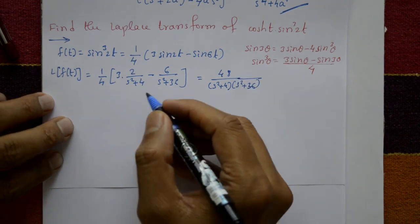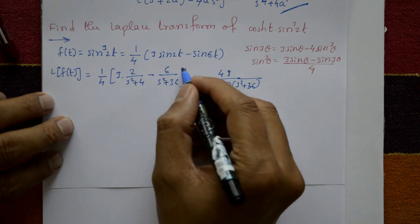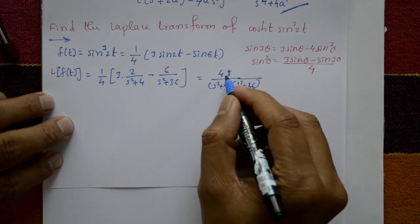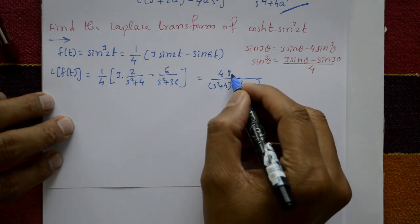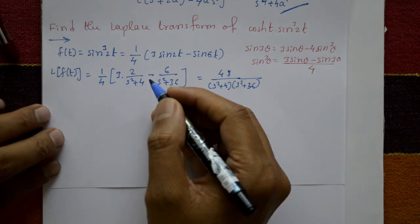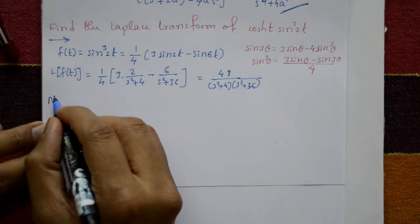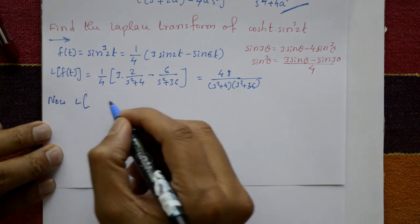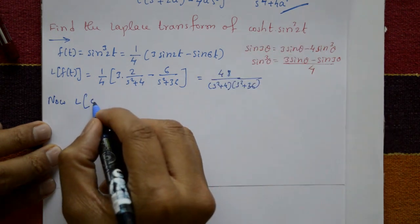Taking the LCM and cross-multiplying, the 4 cancels and we get 48 in the numerator, giving L{sin³(2t)} = 48 / [(s²+4)(s²+36)]. Now we proceed to include the hyperbolic cosine function cosh(t)·sin³(2t).